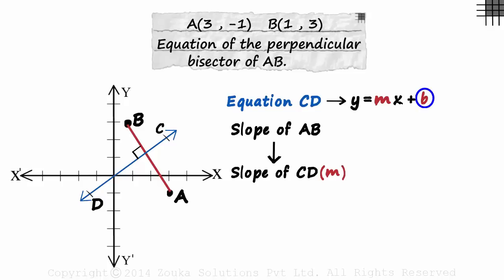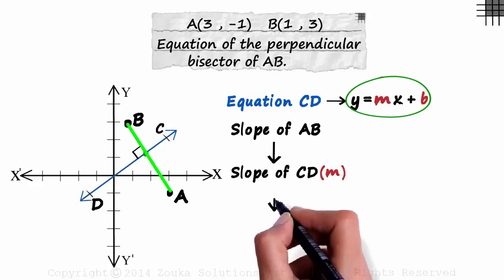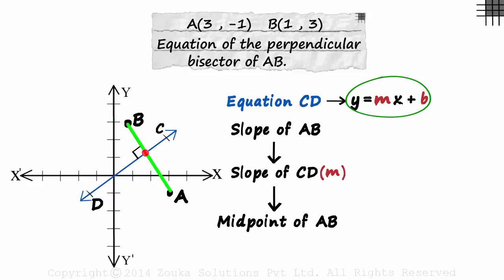Now how do we find B which is the Y-intercept? Look at the slope-intercept form. If we have M, then we just need the coordinates of one point on CD to find B. Because then we can substitute the coordinates in place of X and Y and get B. The only point at which we can find the coordinates is this one. The intersection of AB and CD. Because it is also a midpoint of AB.